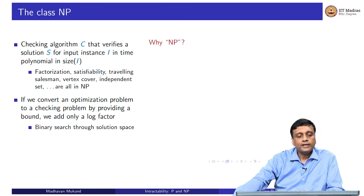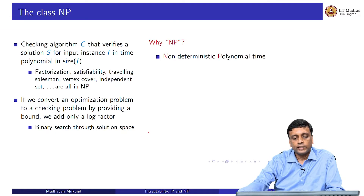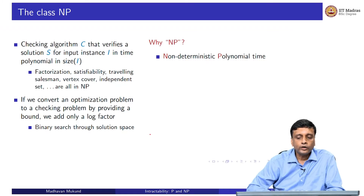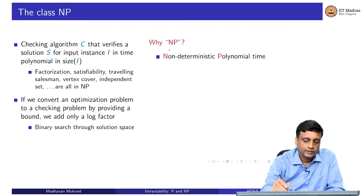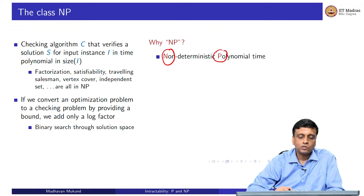Why is this class called NP? It has a historical reason. NP comes from non-deterministic polynomial time. Non-deterministic polynomial time — we have been saying earlier that polynomial time means efficient.